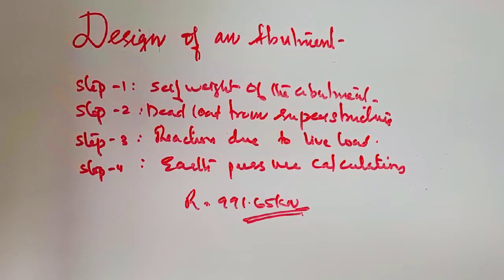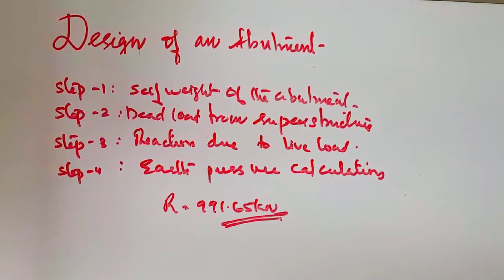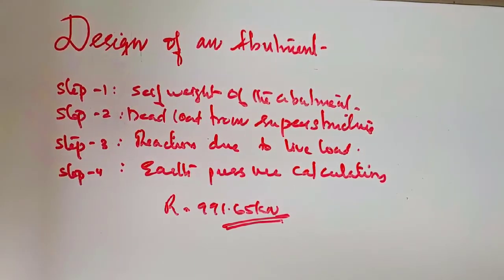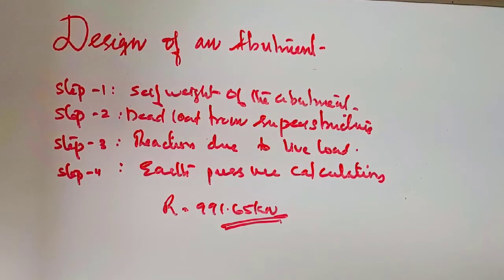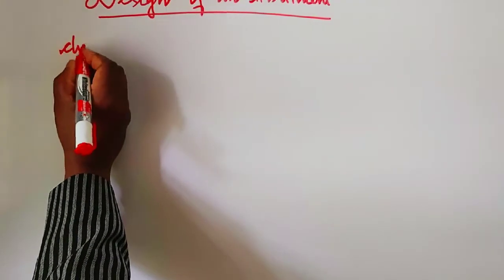Hi everyone, this is a design of bridges session discussing the design of an abutment. In the previous sessions, we discussed steps one through four of abutment design. The earth pressure was calculated as 89.7 kilonewtons, with vertical and horizontal components determined. The resultant was calculated as 991.65. Now we move on to the stability analysis of the abutment.